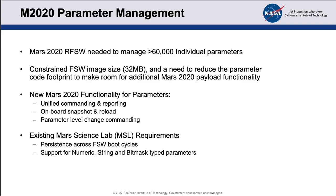We also wanted to add new functionality for the parameters — a unified commanding and reporting system. MSL had a somewhat unified commanding and reporting structure, but modules could change commands in ways that made their parameter commands different than other modules. For Mars 2020, we wanted a unified system for commanding and reporting. We also wanted onboard snapshot and reload capability, and parameter-level change commanding. MSL in most cases would not allow you to change an individual parameter — you had to change the copy, the next level up in the tree. That led to commands where you had to reinforce 10 parameter values when you really just wanted to change one, creating a lot of opportunity for command errors.